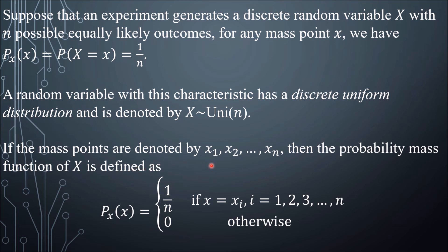If the mass points are denoted by x₁, x₂, ..., xₙ, then the probability mass function of X is defined as P_X(x) = 1/n if x = xᵢ, i = 1, 2, 3, ..., n, and 0 otherwise.